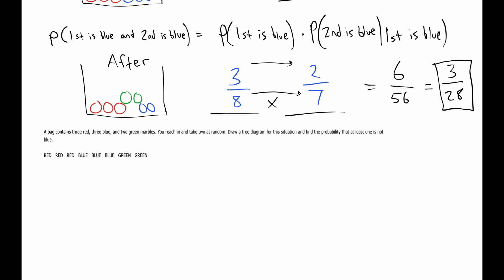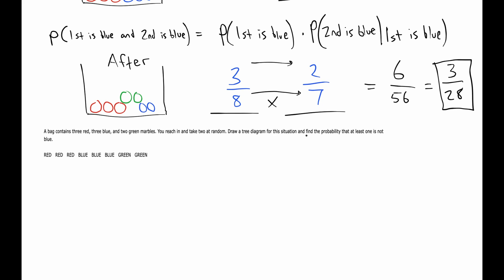Next question says in this same bag, find the probability of at least one of the marbles not being blue. So the probability of both of them being blue and at least one not being blue, these are complements of each other.